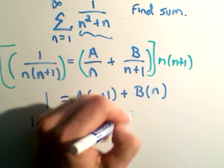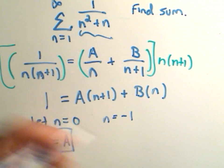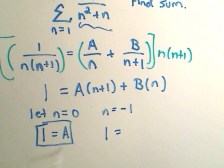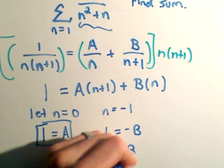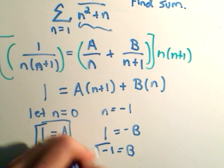Likewise, if we let n equal negative 1, we'll get 1 on the left side. We'll get 0 on the first part. We'll get negative B. So it says that B is going to equal negative 1.